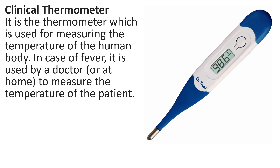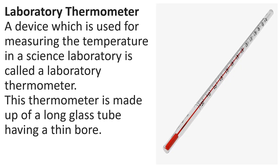Thermometers are of two types. The first one is a clinical thermometer. It is the thermometer which is used for measuring the temperature of the human body. In case of fever, it is used by a doctor or you can also use it at home to measure the temperature of the patient. The other type of thermometer is called a laboratory thermometer. A device which is used for measuring the temperature in a science laboratory is called a laboratory thermometer. This thermometer is made up of a long glass tube having a thin bore. Bore is nothing but the hollow space inside the thermometer.